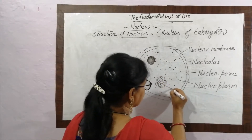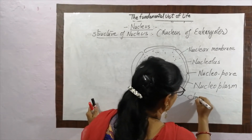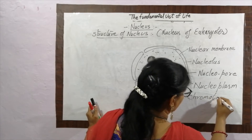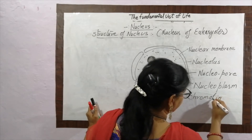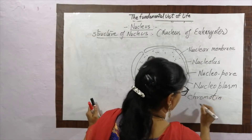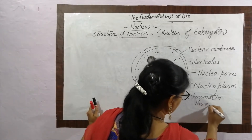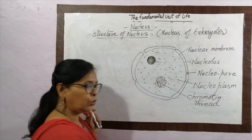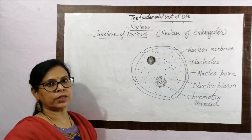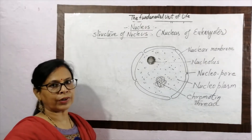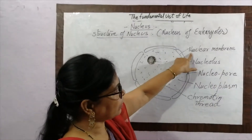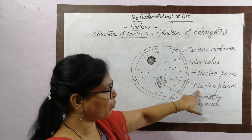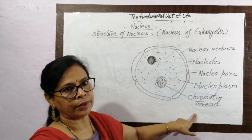The ball-like structure inside is called chromatin. Because it is a thread also, we call it the chromatin thread. The nucleus in eukaryotes is composed of five parts: nuclear membrane, nucleolus, nucleopore, nucleoplasm, and chromatin thread.